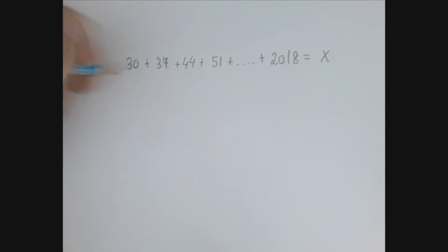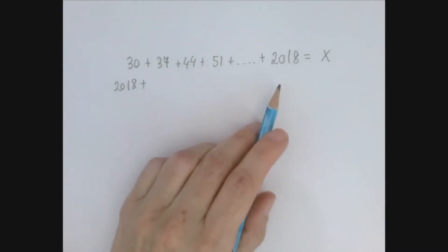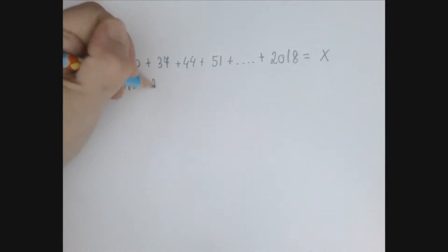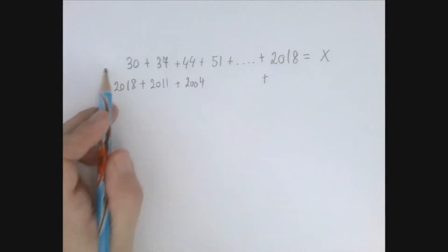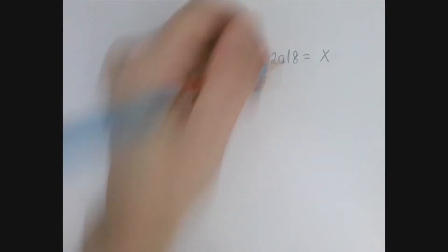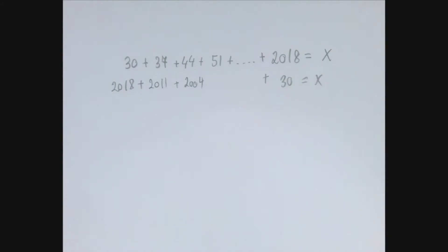So in the first line, the last number was 2018. That's the first one. And then it should decrease by 7. So 2011 is the next one. And then 2004. And the last number in the second row should be what was the first number in the first row. So we just lined up these numbers backwards.